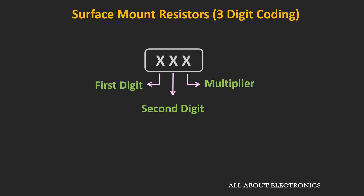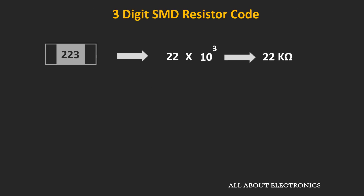Let's take some examples for this three-digit coding scheme. If the code written on an SMD resistor is 223, it means the value is equal to 22 × 10³, which is 22 kΩ. The last digit is 3, so the value is multiplied by 10³, giving 22 kΩ.